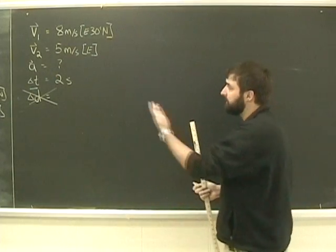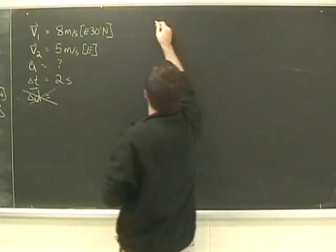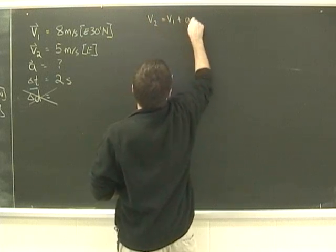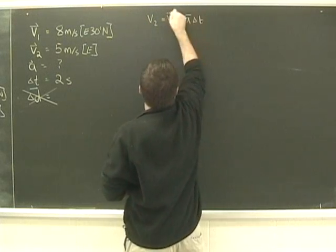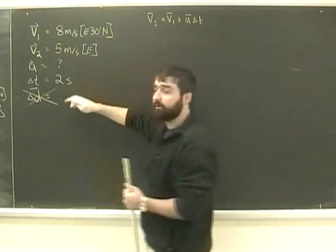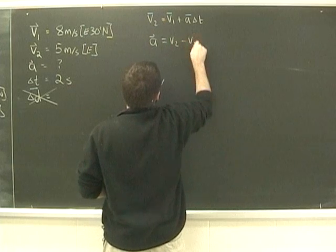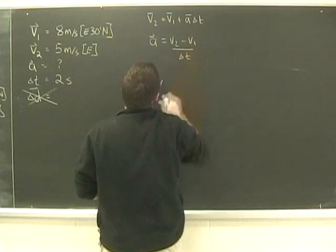I'll look up my big five formulas and pick the one with no displacement: V2 equals V1 plus at, which I'll rearrange for a, the variable I'm trying to solve: a equals V2 minus V1 over t.